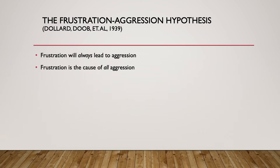The first studies on frustration-aggression were actually pretty supportive. They did things such as having little kids have to wait outside of a room full of attractive toys as they watched other kids being allowed into the room to play with them. And when the kids who were forced to wait finally got a chance to go in there, they behaved much more aggressively — they fought with each other, smashed the toys, and threw them around.